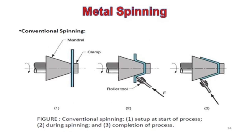In this process, a circular blank is tightly held against the mandrel using a support held in a tailstock. The mandrel has the shape which is to be formed on the blank. Both the mandrel and circular blank are rotated.